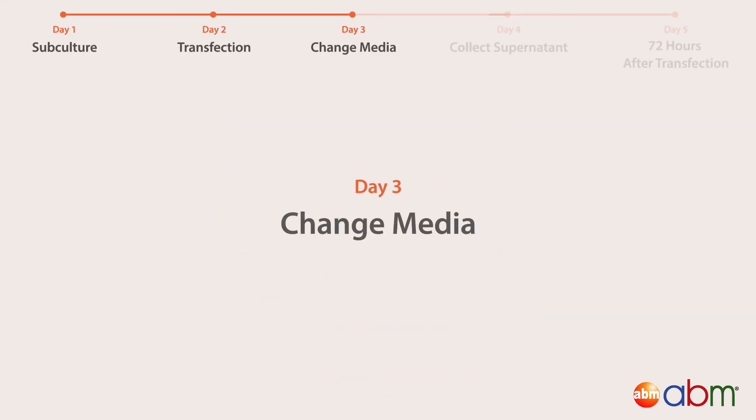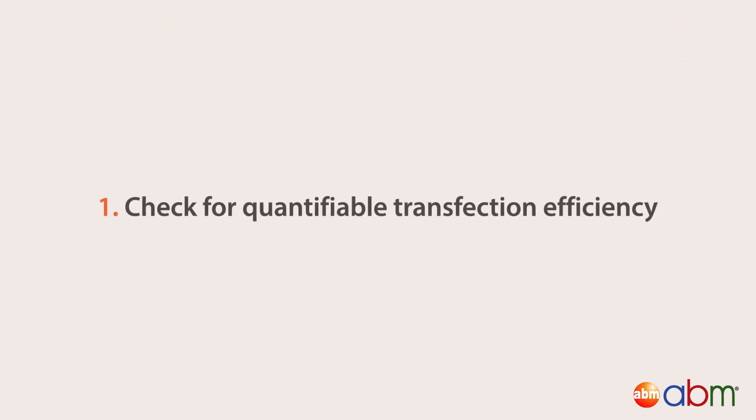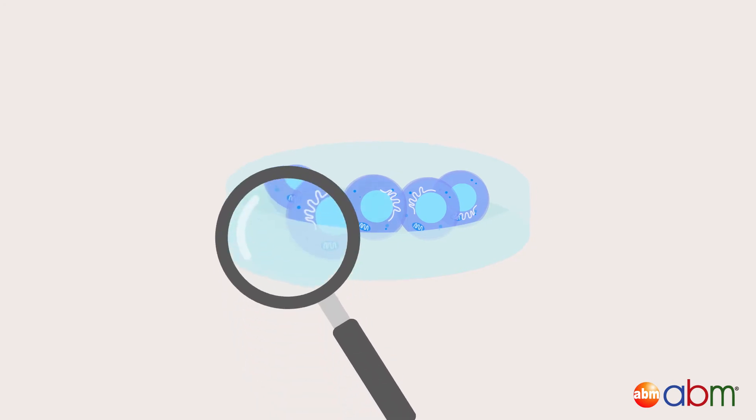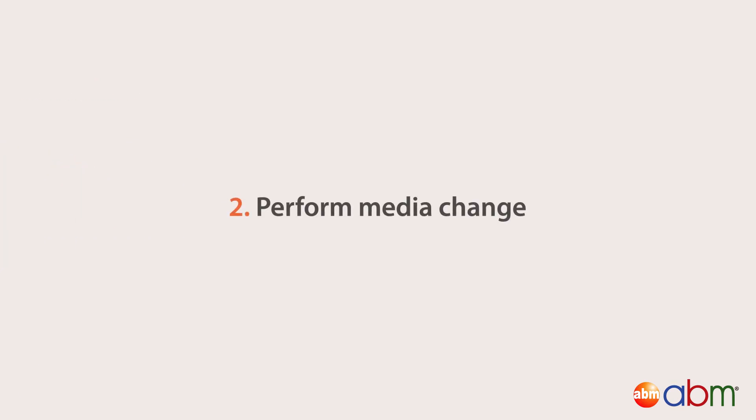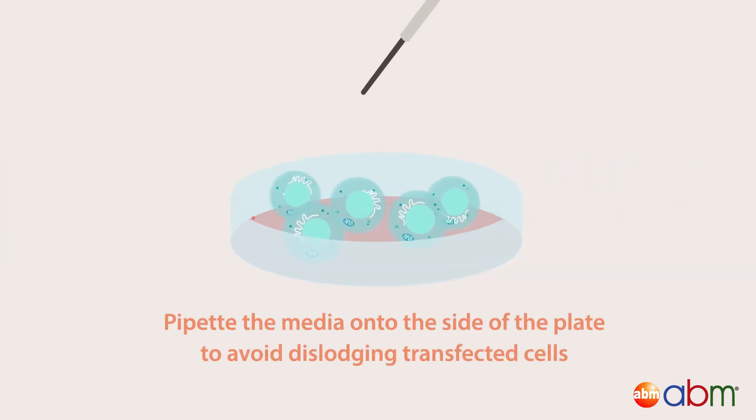Day 3: Check your dishes for quantifiable transfection efficiency. For example, if your plasmid has a fluorescent reporter, check for fluorescence. Perform a complete media change. Pipette the media onto the side of the plate to avoid dislodging transfected cells.